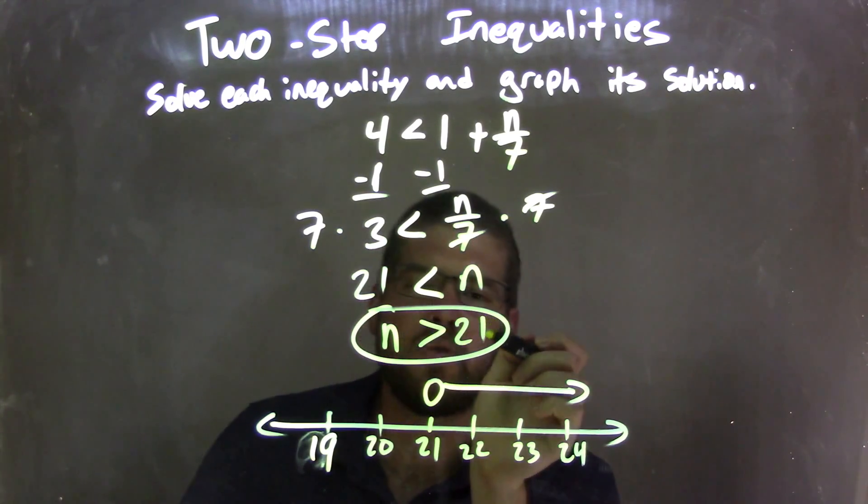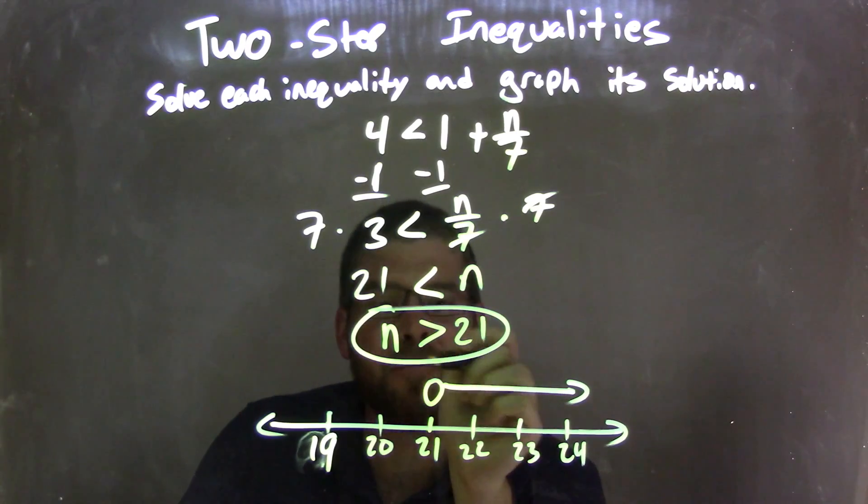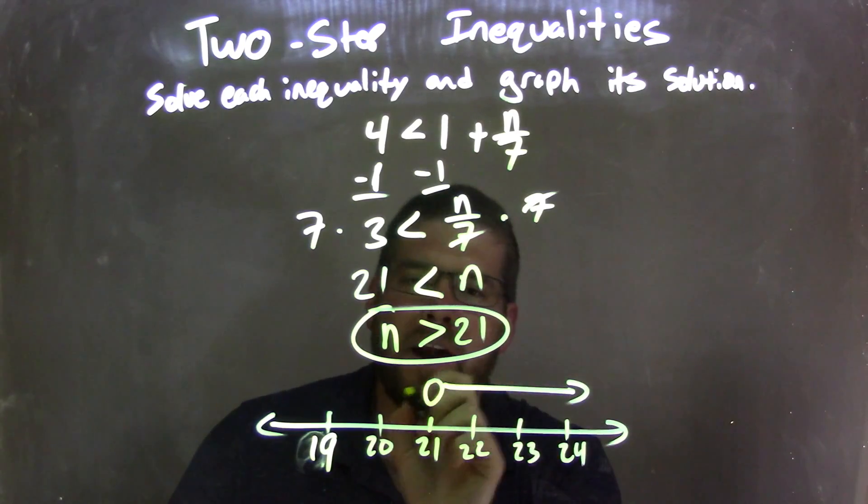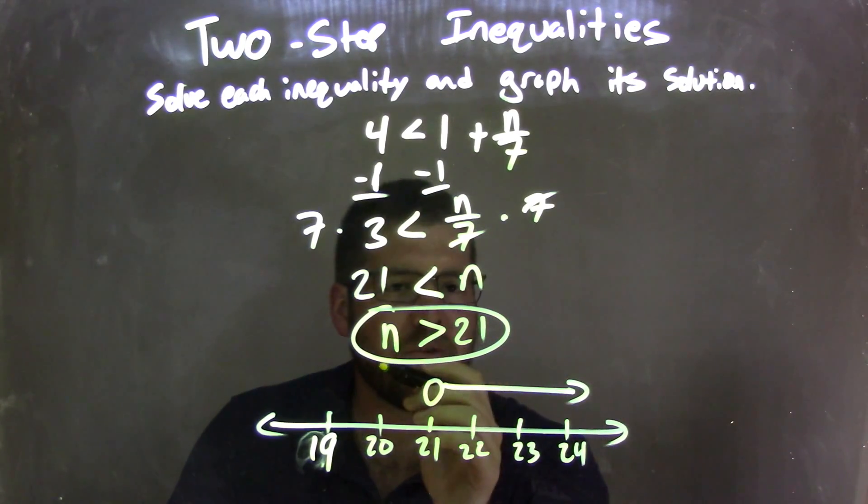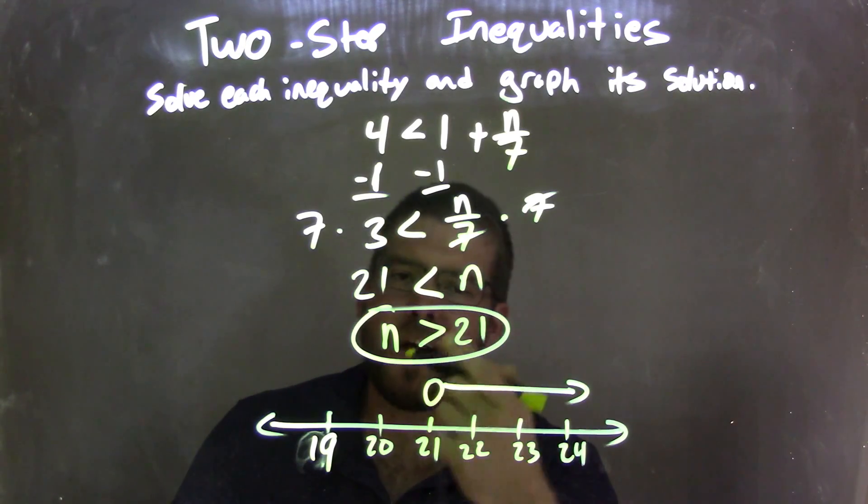Since, remember, this is not equal to 21, we have an open circle, not the closed circle, but open circle. And then we need to shade to the right, or put an arrow to the right, because we said n is greater than 21. So now we have a graph here that matches our answer of n is greater than 21.